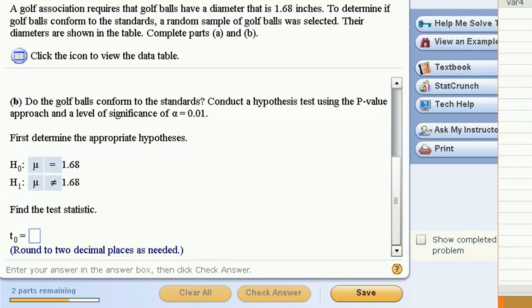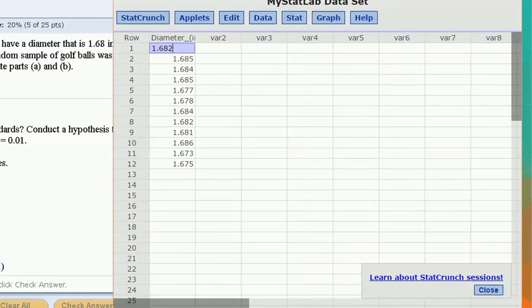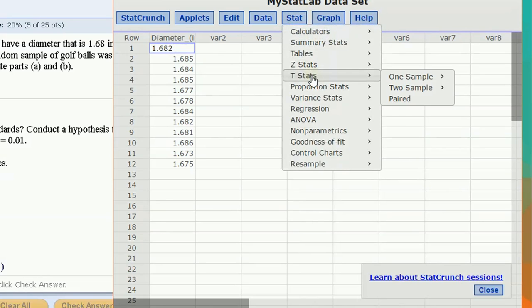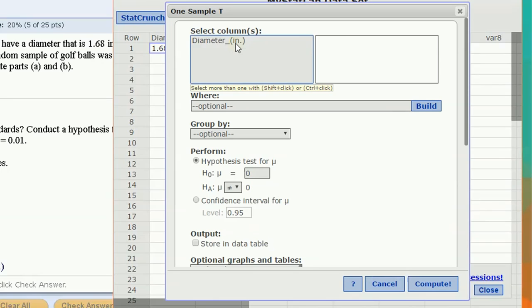Let's get a test statistic. Let's move over to StatCrunch. Under the Stat menu, we'll do a t-stat, one sample with data. We have the data in our column and we want to do a hypothesis test. Let's just set the null 1.68 versus not equal to 1.68. And that's it.